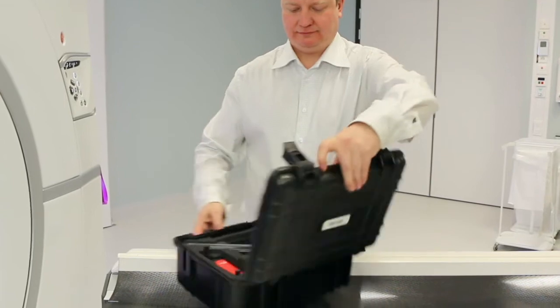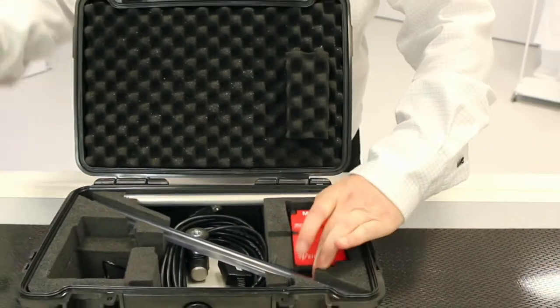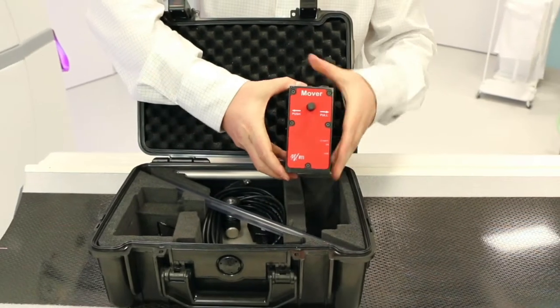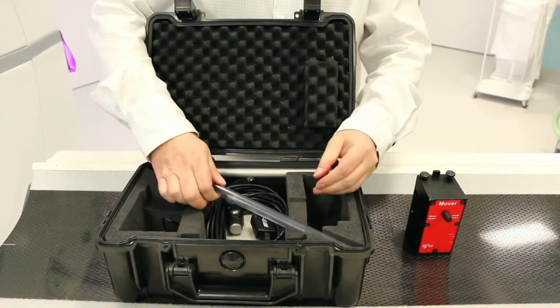We start by showing how to assemble the mover. The mover kit contains the following parts. The mover itself. Plastic tube to protect the user from the wire.